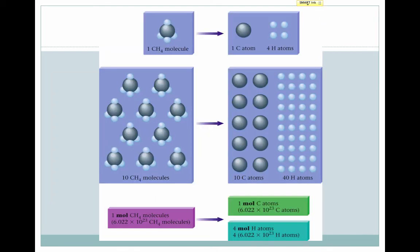This applies to molecules as well. If we have one CH₄ molecule, that means we have one carbon atom and four hydrogen atoms. If we have 10 CH₄ molecules, that means we have 10 carbon atoms — because each CH₄ has one carbon — but 40 hydrogen atoms, because each of the 10 CH₄ molecules has four hydrogen atoms. Likewise, if we have a mole of CH₄ molecules, we have a mole of carbon atoms, but we have four moles of hydrogen atoms, because each molecule contains four atoms of hydrogen.